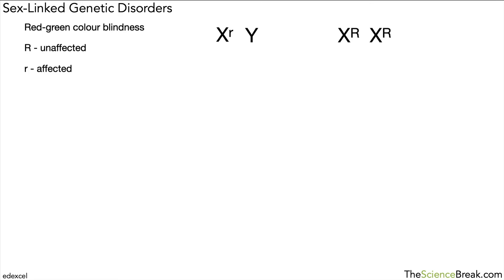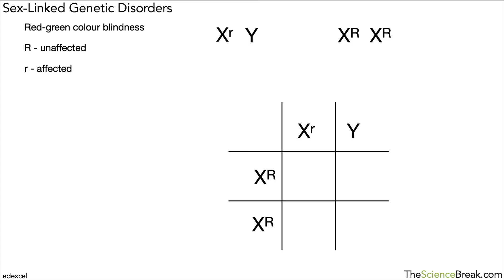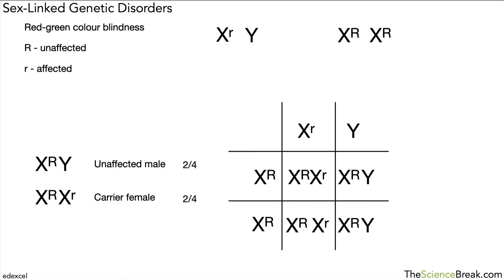Let's try one more — pause, give it a go, then we can go through it together. In the Punnett square, the male is along the top and the female down the side. This time we get two unaffected males and two carrier females, so there's a 50% chance of each. This is how sex-linked genetic disorders work, and how you do crosses involving them. Red-green color blindness is one of the most common examples.